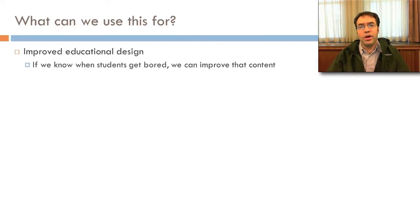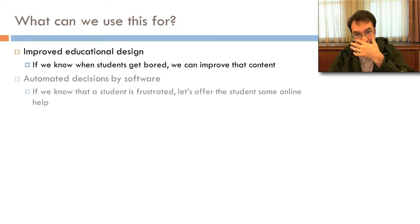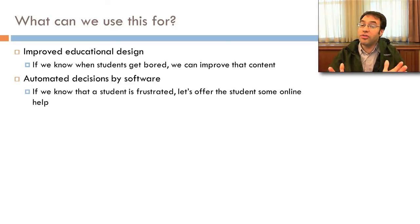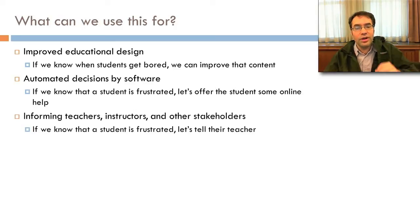What can we use this for? Well, a lot of things. First of all, improved educational design. If we know when students get bored, we can improve that content. Second, automated decisions by software. If we know that a student's frustrated, let's offer the student some online help. And third, informing teachers, instructors, and other stakeholders. If we know the student's frustrated, let's tell their teacher.